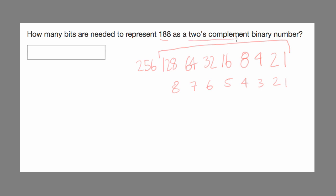But this is asking us for a two's complement binary number. Since this is a positive number, the top bit, the 9th bit, is going to need to be a 0 so that the 8th bit can be a 1, and we'll still interpret this as a positive number. So in this case, we're going to need 9 bits to represent 188 as a positive two's complement binary number.